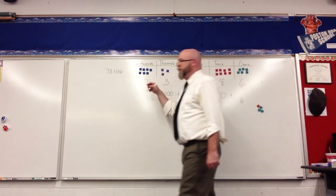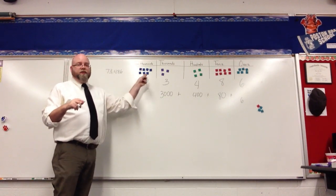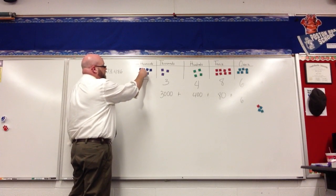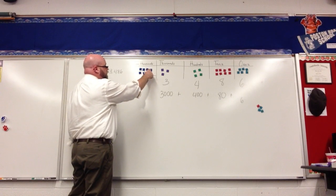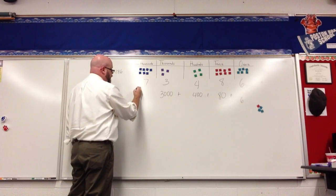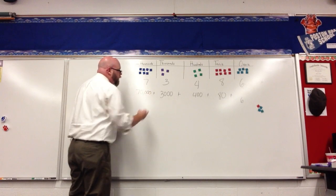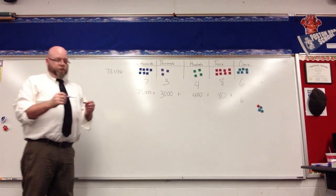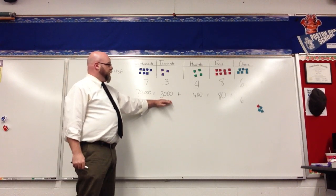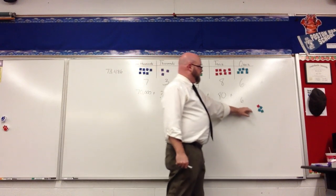And here I have 7 ten thousands. I would count by 10 thousands seven times: 10,000, 20,000, 30,000, 40,000, 50,000, 60,000, 70,000. So the expanded form version of this would be 70,000 plus 3,000 plus 400 plus 80 plus 6.